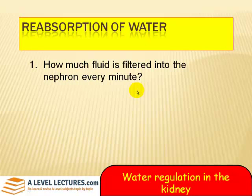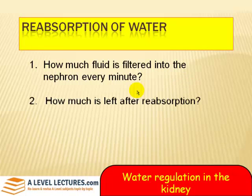Let's just recap first with a few facts and figures. How much fluid do you think is filtered into the nephron every minute? Remember there are a million nephrons in every kidney — two kidneys. Well, it's about 125 cubic centimetres. Now don't forget, as soon as it's filtered through, a lot of it is going to be reabsorbed in the proximal convoluted tubule. So how much do you think is left after reabsorption? Well, it's about 45 cubic centimetres.